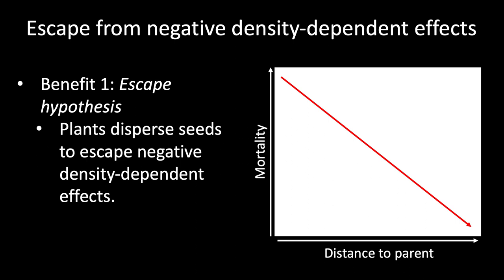That situation involves something called negative density-dependent effects: the greater the density of offspring, the greater the negative effects from seed pathogens and seed predators, and that density is associated with the parent plant. The farther away you get from the parent plant — the farther you disperse — the lower your risk from those causes of mortality. So one idea for why plants disperse seeds is called the escape hypothesis: plants disperse seeds to escape negative density-dependent effects.